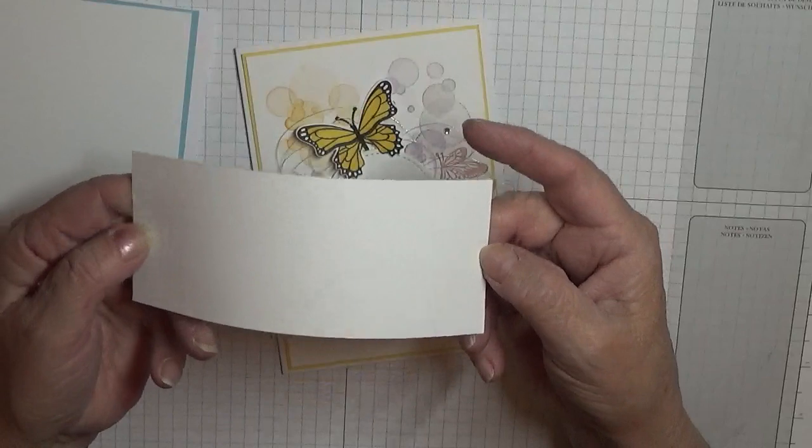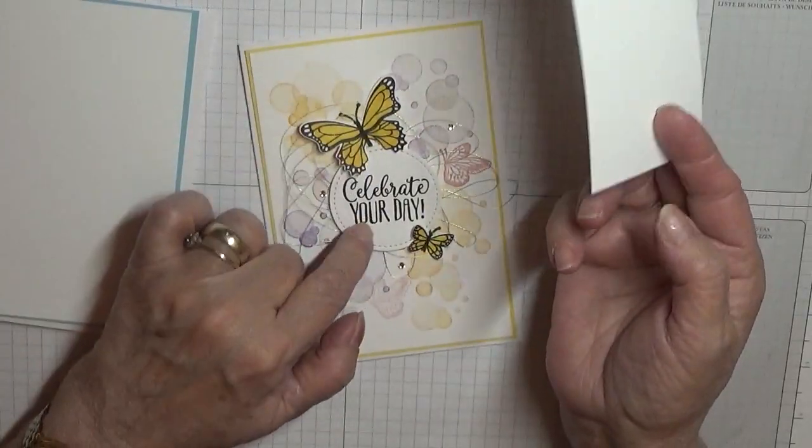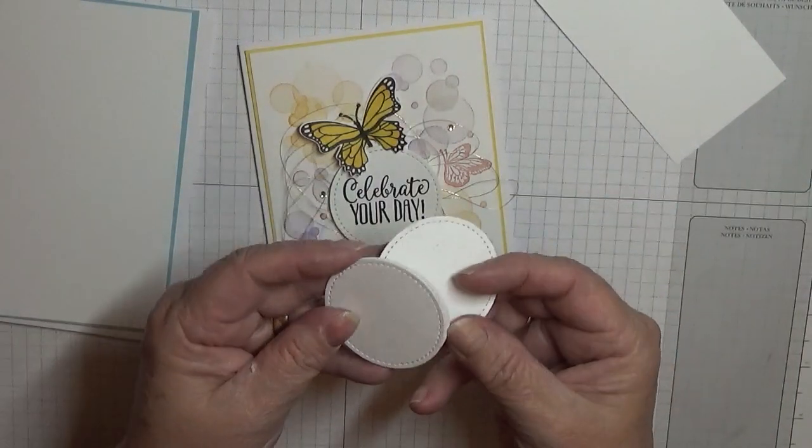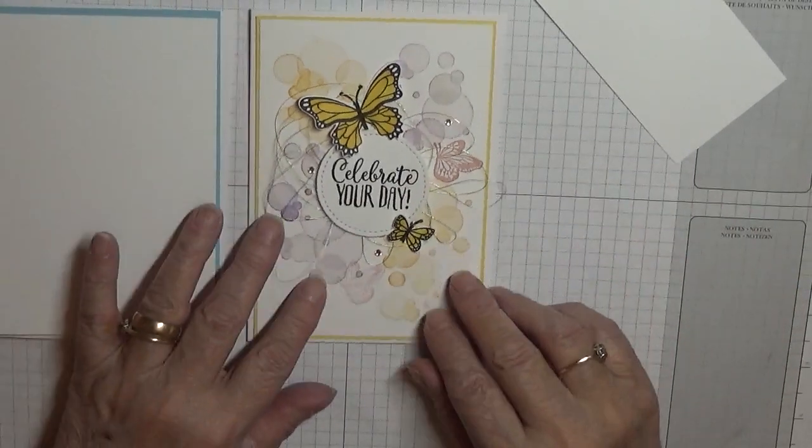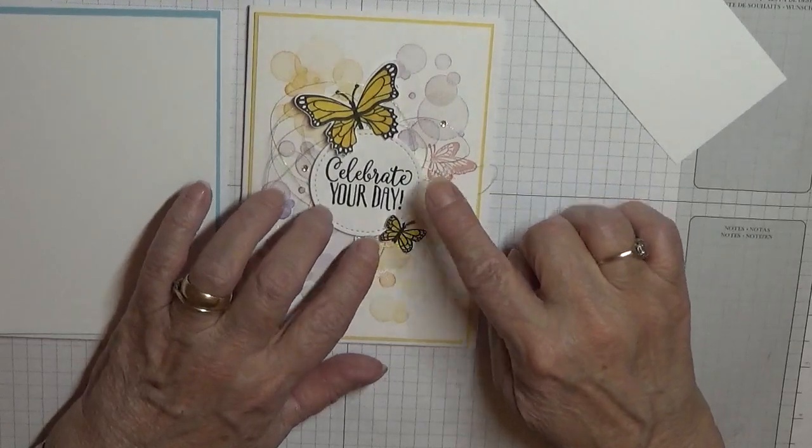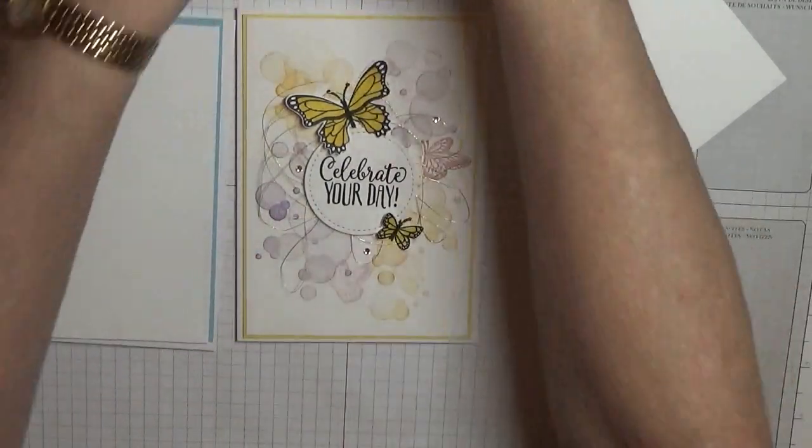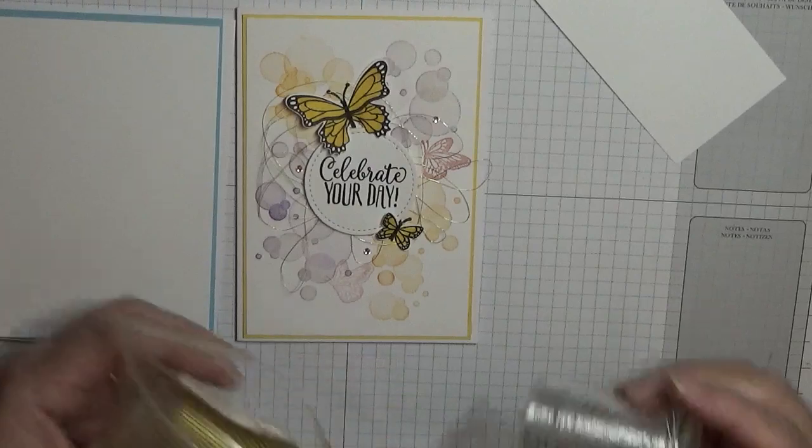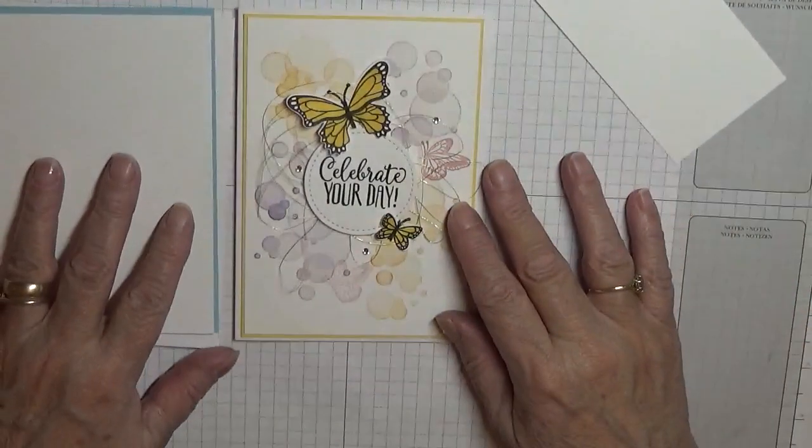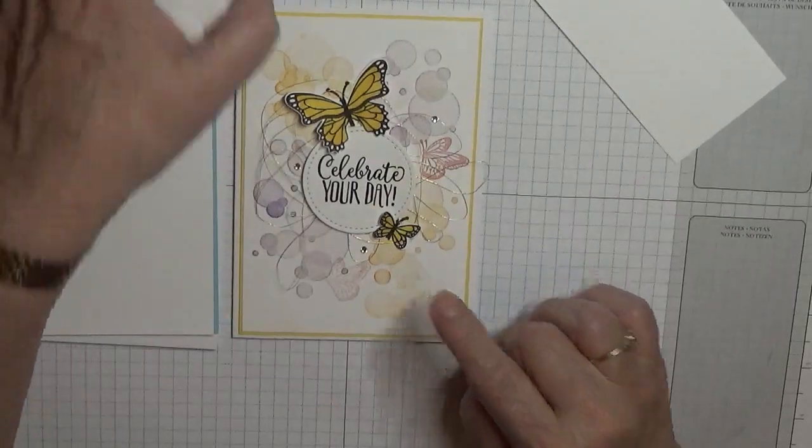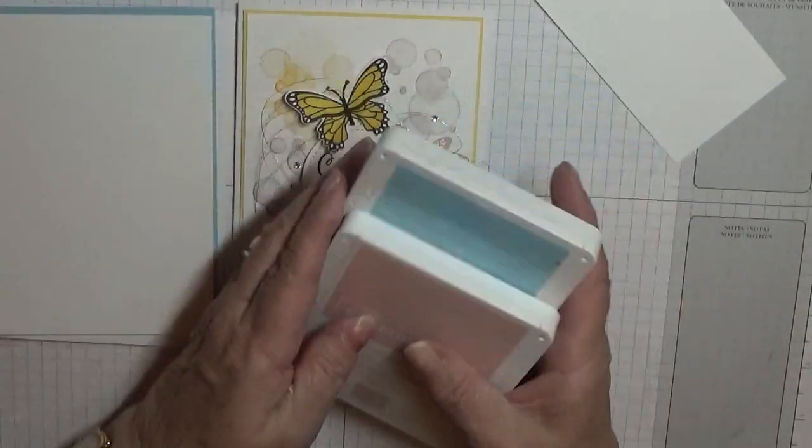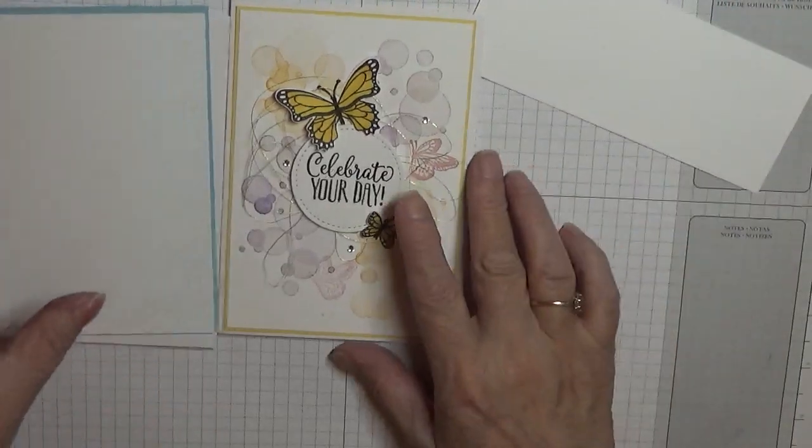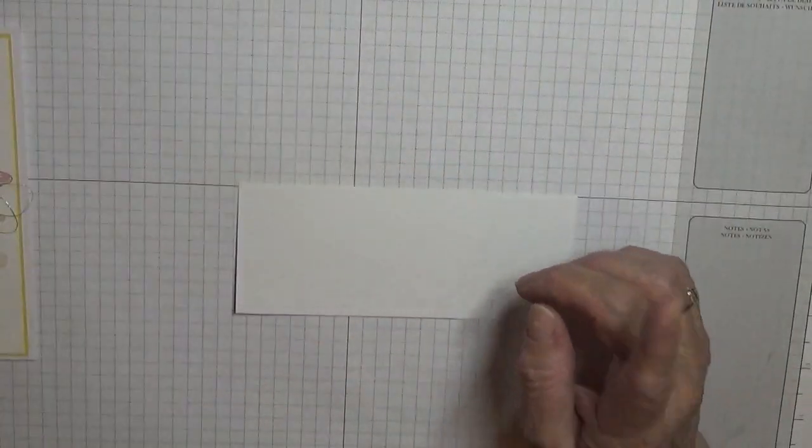And some scrap for the butterflies and the circle. I have cut out four circles just in case I make a mistake. I also use some gold thread on this one but on the one I'm going to make today I'm going to use the silver thread. The color inks I'm going to use are balmy blue and blushing bride as well as black for the butterfly.